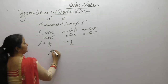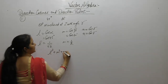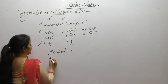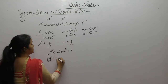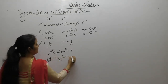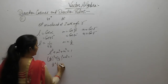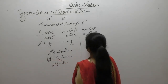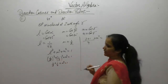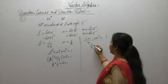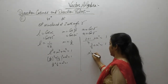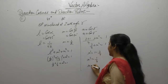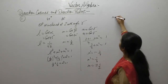We know the identity l² + m² + n² = 1. Putting in the values: (1/√2)² + (1/2)² + n² = 1, which gives 1/2 + 1/4 + n² = 1. Taking the LCM: (2 + 1)/4 + n² = 1, so 3/4 + n² = 1, giving n² = 1 - 3/4 = 1/4. Therefore n = ±1/2.